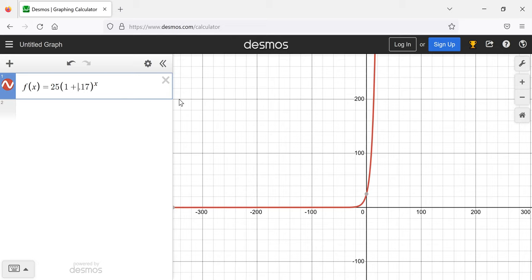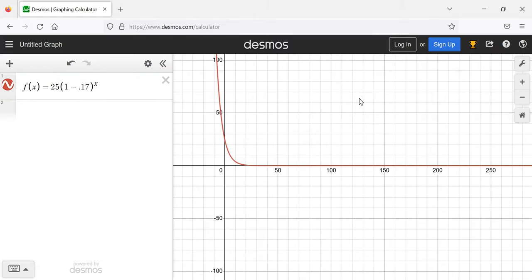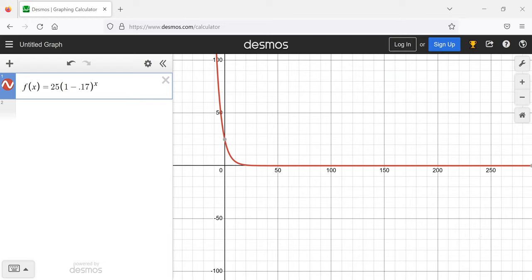If I change this addition to subtraction, I get a graph that looks like this. Instead of increasing, the exponential function is decreasing down to zero.